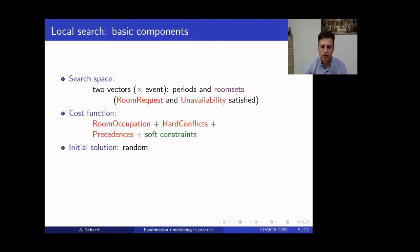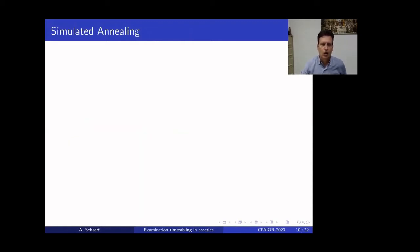The initial solution is totally random. The neighbors, the first one is moving one event. So, this is standard, classical neighborhood of this type of problem. So, change the period and the room set of a single event. But, for the peculiarity of our problem, we have a second neighborhood, which is move an exam. So, we move together a written and oral part of the same length of the movement.